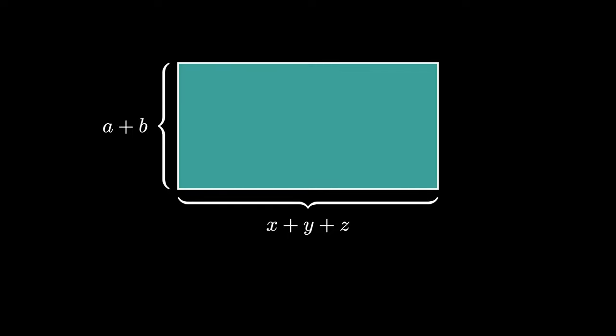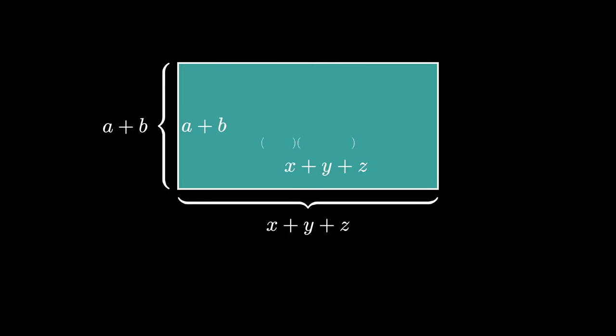Perhaps you now see how to extend FOIL. Suppose we want to compute the product of the numbers A plus B and X plus Y plus Z. We can interpret this product as the area of a rectangle that has dimensions A plus B and X plus Y plus Z, so that we have the area here.